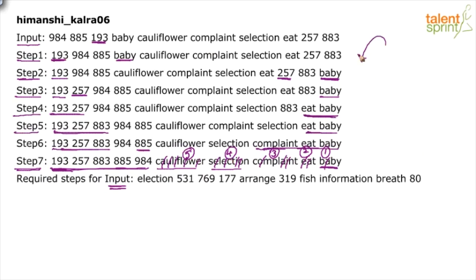Numbers are moved towards the left and words are moved towards the right, alternating in each step. The same process has to be done for the given new input, and based on this, five questions would be asked which you can answer very easily once the full rearrangement is done.